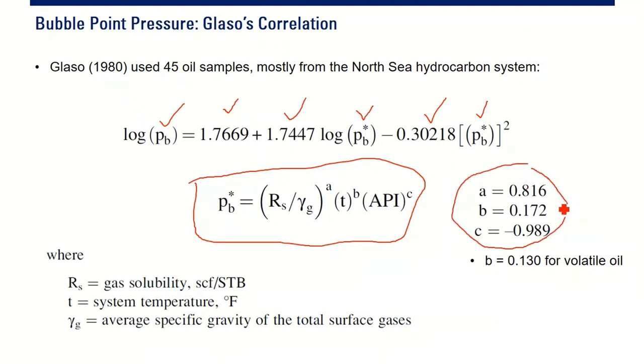But be careful. For volatile oil, B of 0.13 is better than this number.